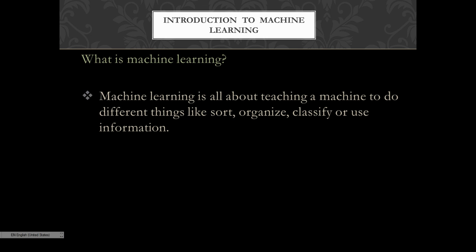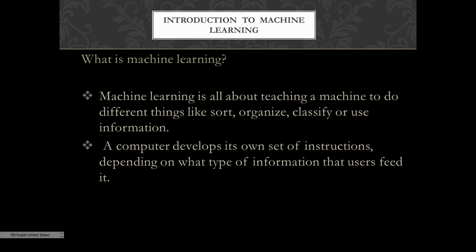Machine learning is all about teaching machines to do different things like sort, organize, classify or use information. A computer develops its own set of instructions depending on what type of information that users feed it.